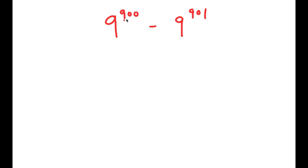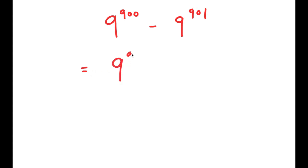9 to the power of 900 is actually a factor of 9 to the power of 901, so all we have to do is rewrite 9^901 as something times 9^900. We can use properties of exponents to do this, so I'm going to rewrite 9^901 as 9 to the power of 900 plus 1.